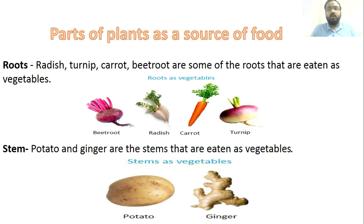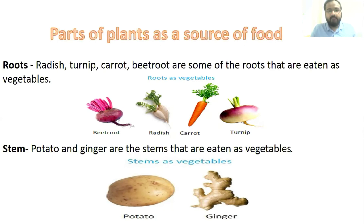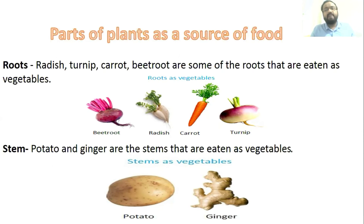First are roots. Radish, turnip, carrot, and beetroot are some roots that are eaten as vegetables. These are nothing but the roots of their respective plants, and we consume them as food.